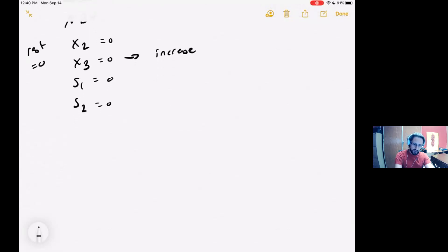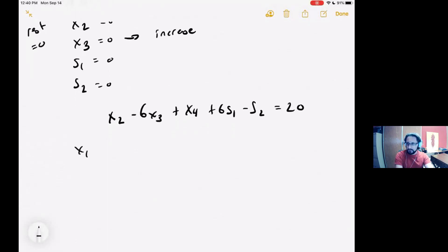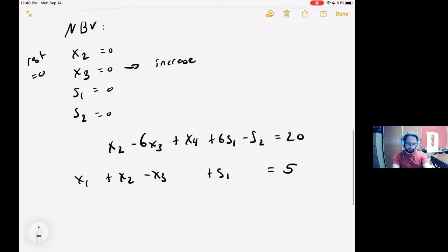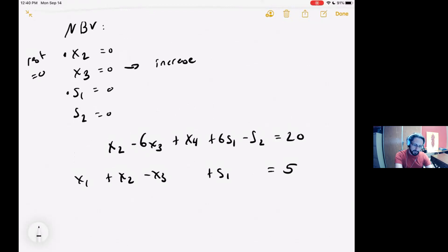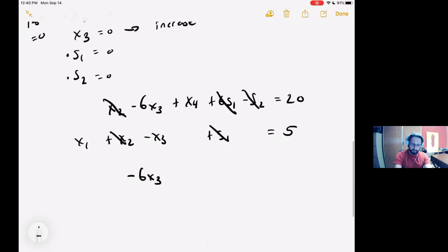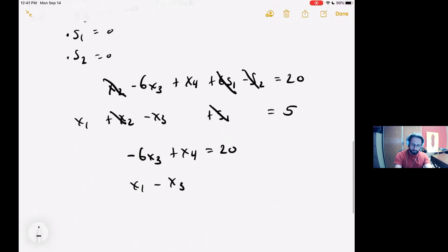Rewriting the results of that tableau, I have x2 minus 6x3 plus x4 plus 6s1 minus s2 equals 20, and I have x1 plus x2 minus x3 plus s1 equals 5. This is me rewriting those two constraint equations. Now notice I have these three non-basic variables. That means they are going to remain zero, and I can cross them out of these equations. That creates two simplified equations.